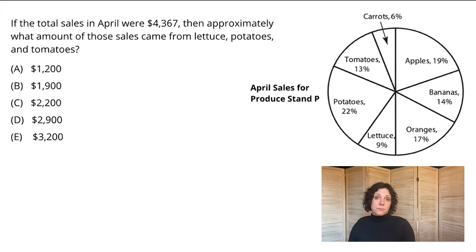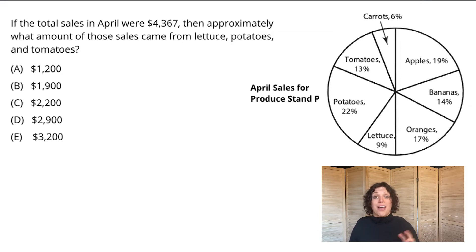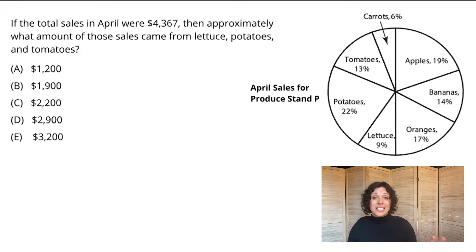With data interpretation, problems can be multiple choice — so standard five answer choices — it could also be choose all that apply, or numeric entry, where you plug in your own number into a box. So because this is multiple choice, and for all multiple choice problems, I go to the answer choices first, just to see if they offer any clues. Typically, what I'm looking for is to see how spread apart they are, to let me know if I'm allowed to estimate. And in general, for data interpretation, eyeballing and estimating should be your first move to see if that's a possibility. So looks like we can.